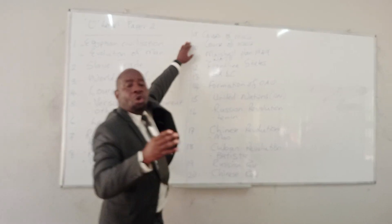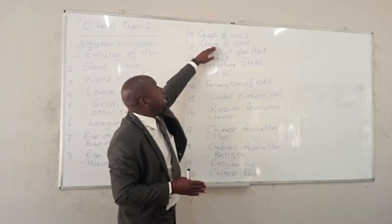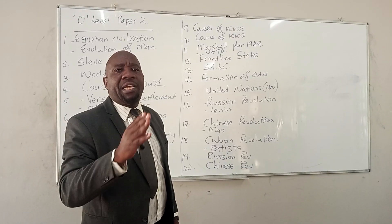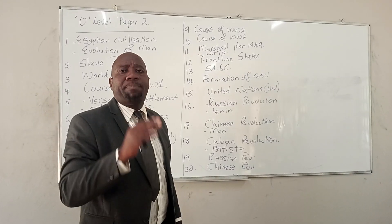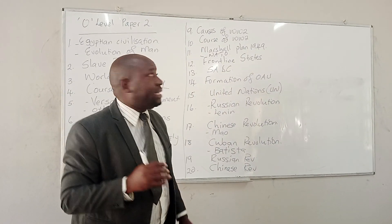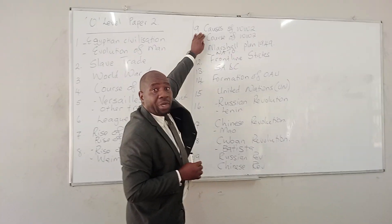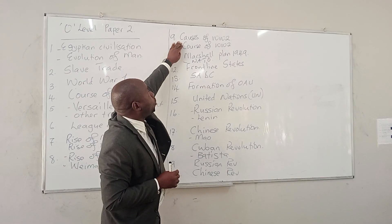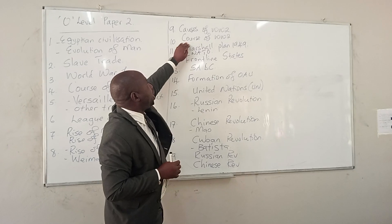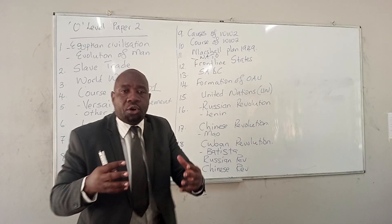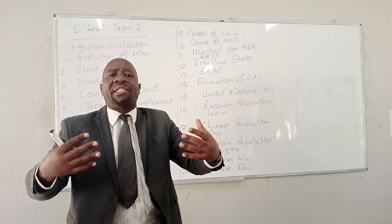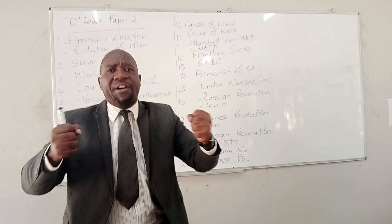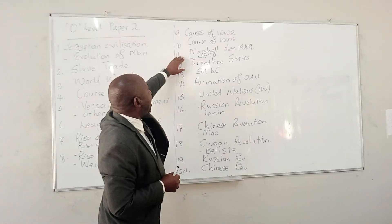Number nine, they can ask you on the causes of World War Two. World War Two broke out on 1 September 1939. They can ask you on what took place when the war broke out and the causes that led to World War Two. They can ask you number ten on the course of World War Two — what took place during the war as European countries were fighting against each other.